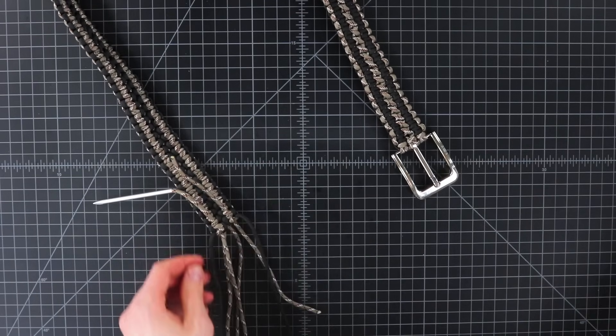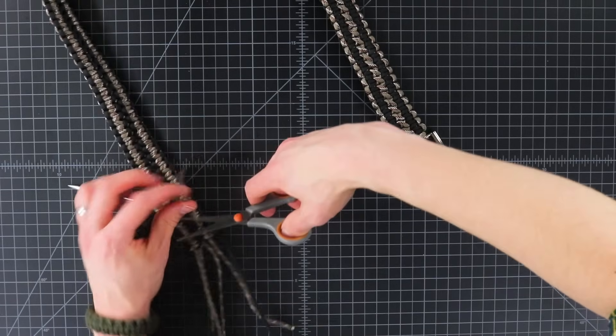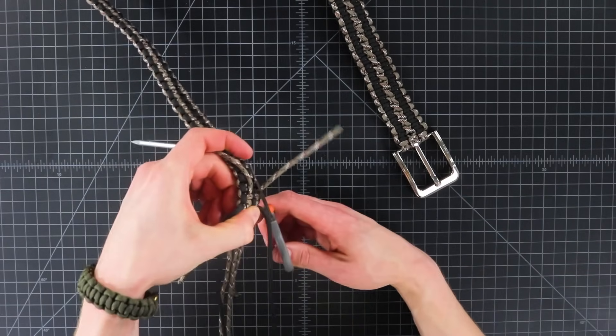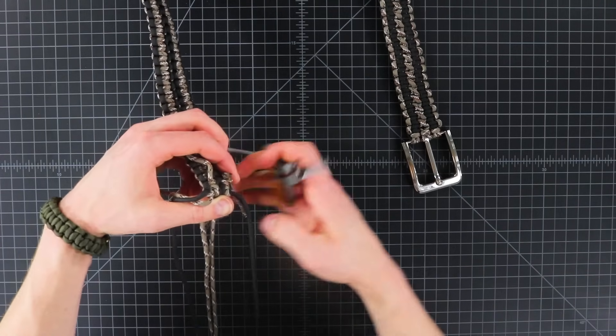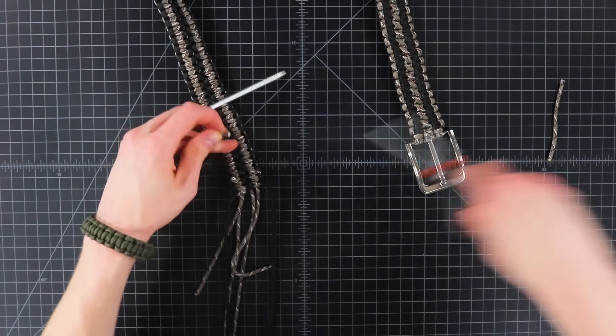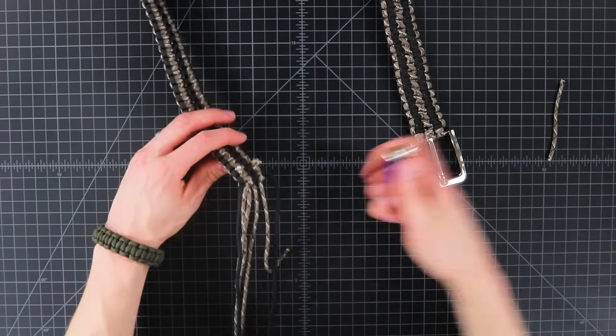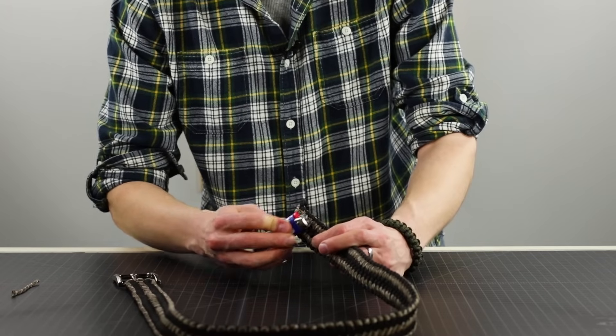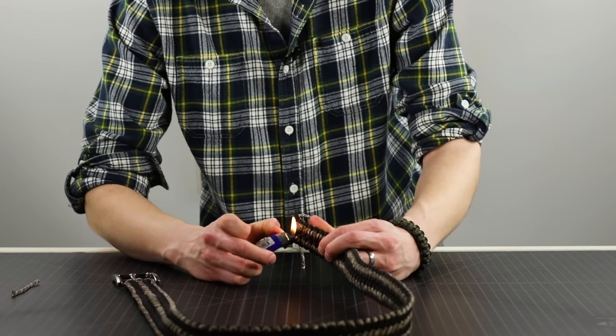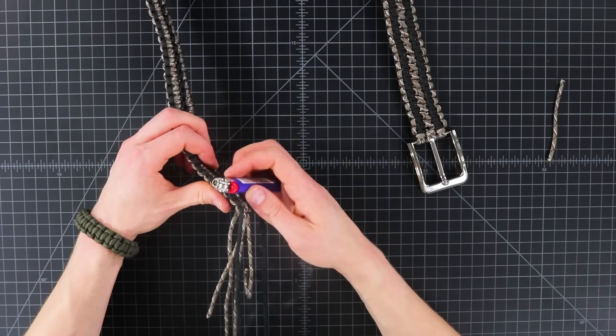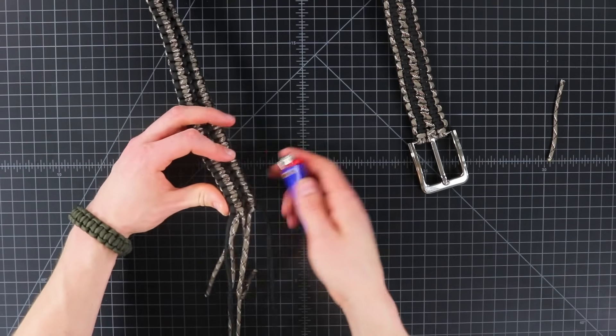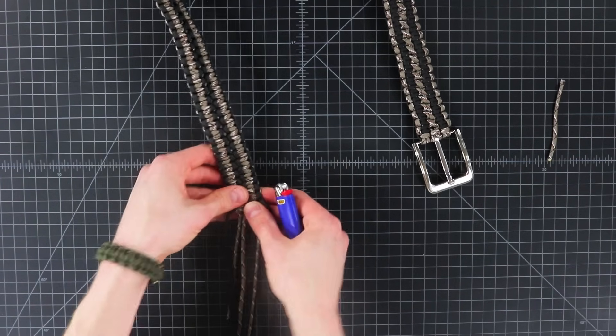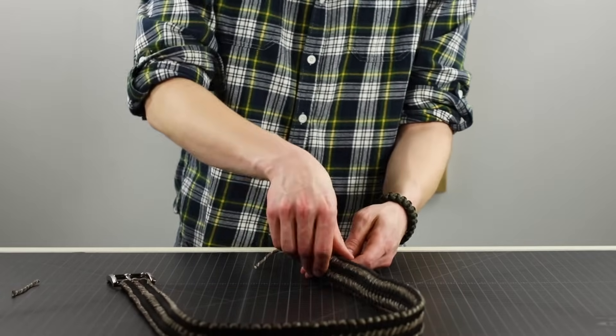And then you can clip those about a quarter inch from the weave. Then we'll do our meltdown and push those against. Like that. And we'll flip it back over so our top is facing up.